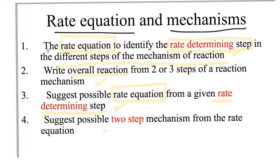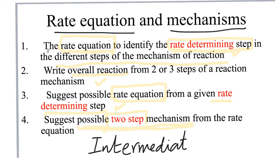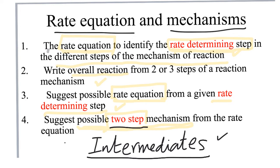The fourth objective is slightly harder: you should be able to come up with a possible two-step mechanism. There are methods you can use to make this process easier. When we do the two-step mechanism, we'll come across the word 'intermediates'. These intermediates are something you come up with when you construct a two-step mechanism, and that makes it slightly harder. With a little bit of practice, you should get an idea of how these intermediates look.